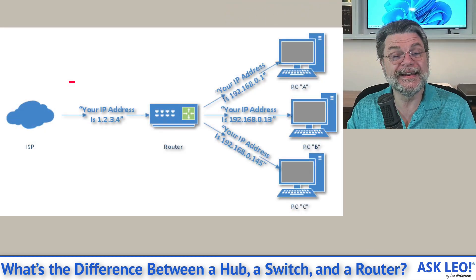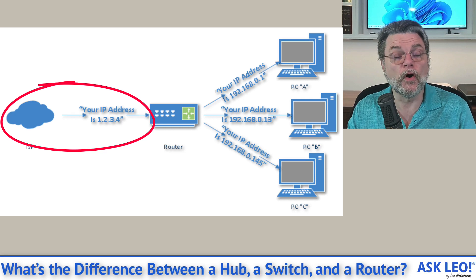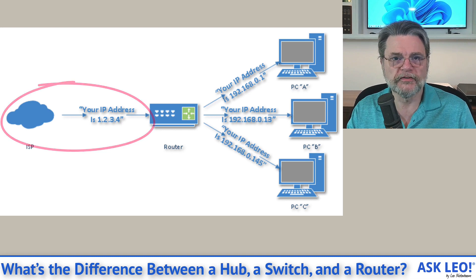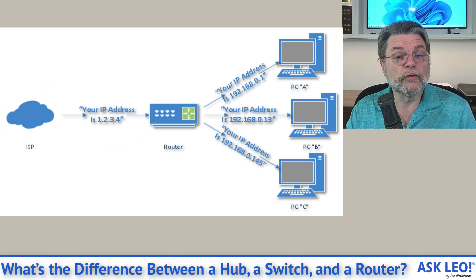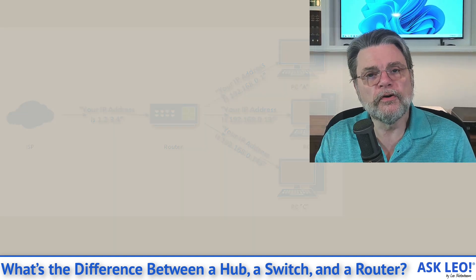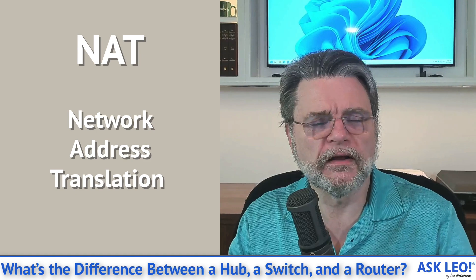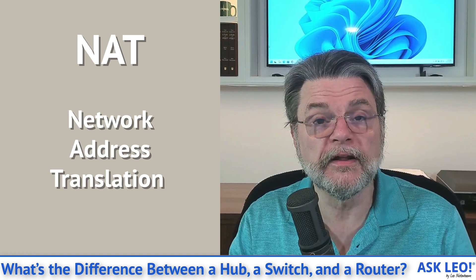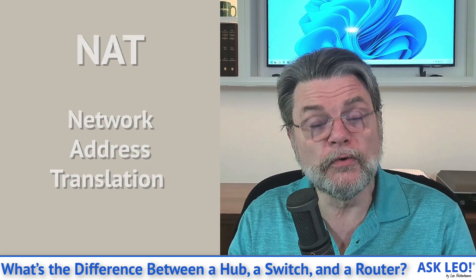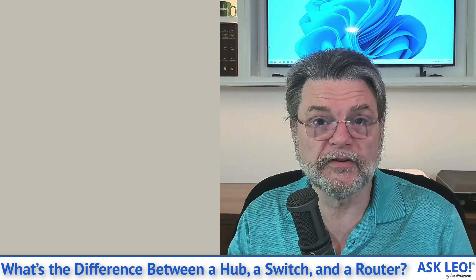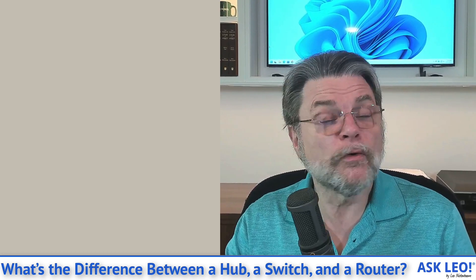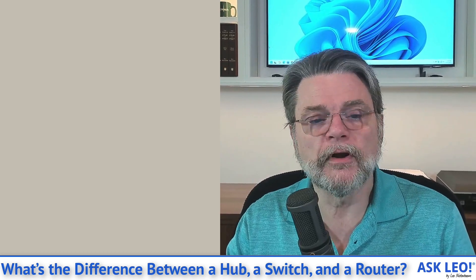On a router, one of the ports is usually considered special — that's the connection to the internet. That internet connection is by design shared by the router to all of the machines connected on the other, so-called local ports. The router has to do a fair amount of smart work, usually referred to as NAT routing — network address translation. That's what allows you to share a single internet connection and a single IP address with multiple devices on your local network, and that requires the intelligence of a router to make it happen.